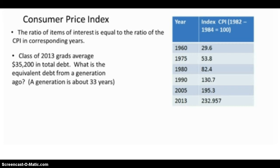As we read through the problem given, we're interested in the year 2013 and also a generation before that. A generation is about 33 years, so if we take 2013 and subtract 33, we would end up with 1980.